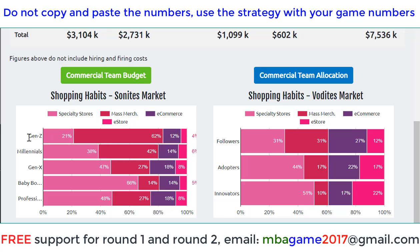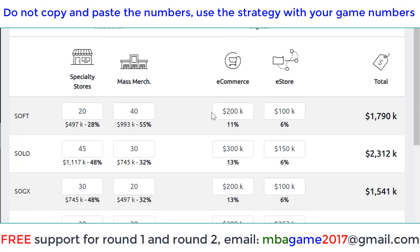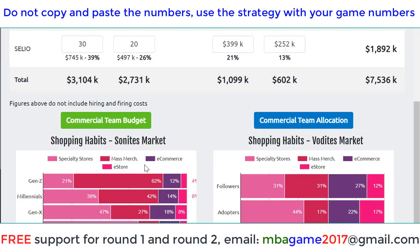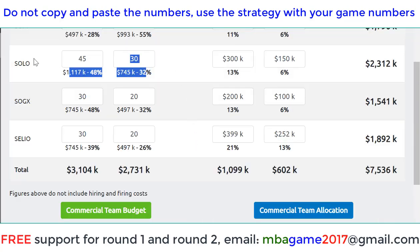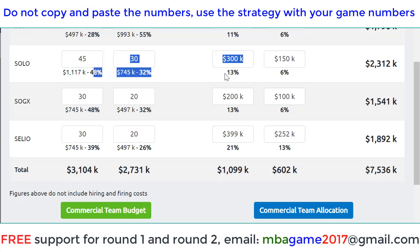If you look at the details, you can allocate the budget here for the solo brand as well. If you focus on Gen X, the index percentages here — 50, 30, 20, and 10 — you can do that, and then take the percentage. The total comes from the sales and profit of each product.